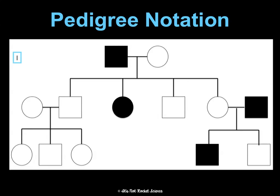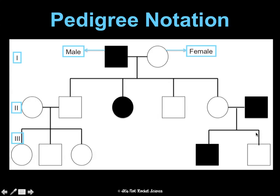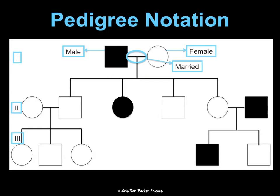There's notation you need to know. We label each generation top to bottom — generation 1, 2, and 3 — and number individuals left to right. Squares are males and circles are females. A horizontal bar represents marriage and a vertical line represents children. Birth order is shown left to right — oldest to youngest. Shaded symbols mean that individual has the trait or disease being traced; unshaded means they do not.